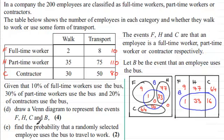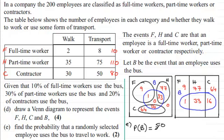For the last part, part E, we're asked to find the probability that a randomly selected employee uses the bus to travel to work — that's P(B). This is very easy now that we've got the Venn diagram, because we just count up: 1, 33, and 16 people use the bus, giving a total of 50. So 50 people use the bus out of 200, which reduces to a quarter, or as a decimal, 0.25. Any of these exact answers would be suitable.